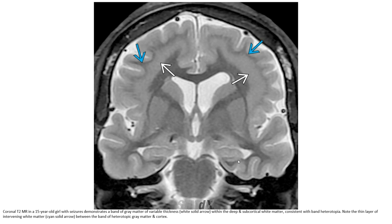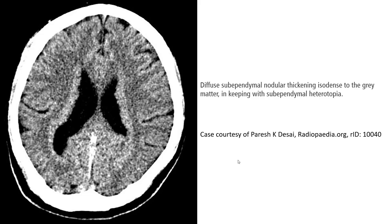This is a coronal T2 image in another case, along with CT images of heterotopia of gray matter. Subependymal nodular lesions isolated to the gray matter are identified, consistent with subependymal heterotopia.